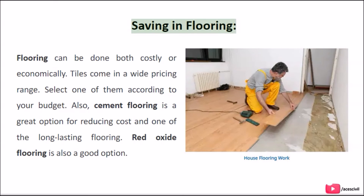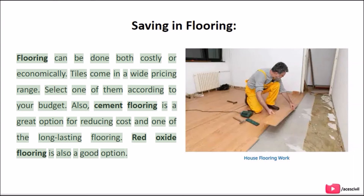The fourteenth tip is saving on flooring. Flooring can be done both costlily or economically. Tiles come in a wide pricing range, so select one according to your budget. Cement flooring is a great option for reducing cost and is one of the most long-lasting flooring types. Redoxide flooring is also a good option.